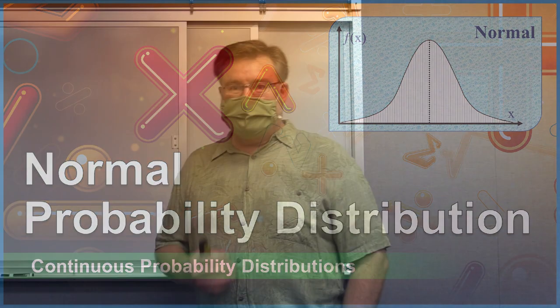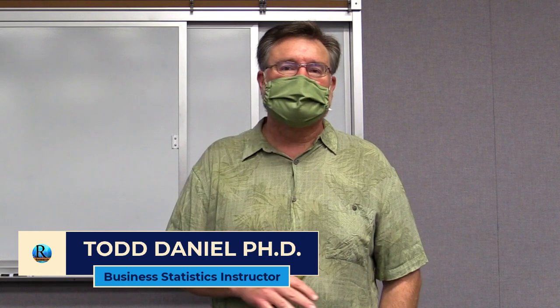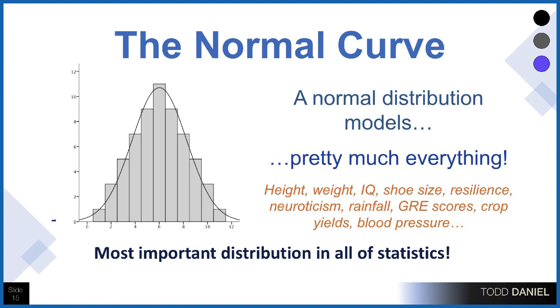The normal probability distribution is the most important distribution in all of statistics. It's one that we will use all of the time because of its utility. There are specific times when we use a uniform probability distribution, an exponential distribution, or a Poisson distribution, but the normal probability distribution gets used very frequently because it models pretty much everything.